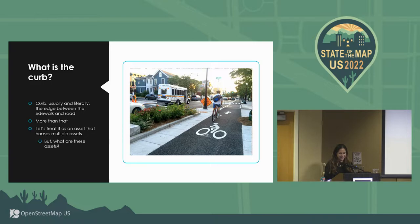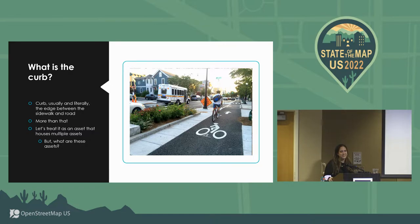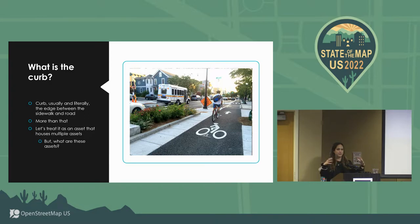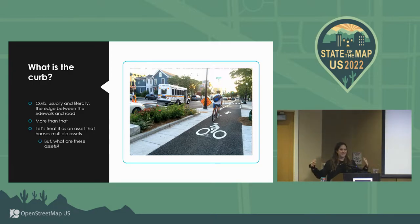For the purposes of curb management, we're going to treat the curb as an asset that houses many other assets. If you are in the transportation industry, you've probably heard about asset management. A little secret about a lot of governmental agencies and municipalities is that their data can be really messy. They could have various departments within their own agency where they're not working together, so there's no standard way of having an inventory of the assets.